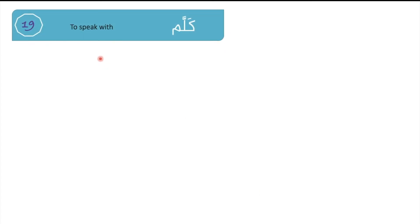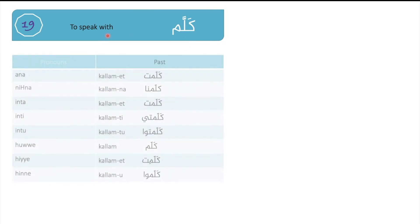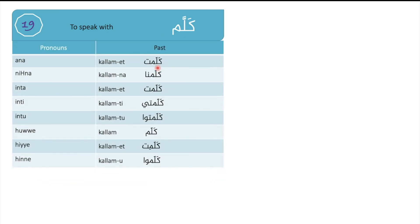Our 19th verb is كلّم (kallam), meaning to speak with someone. Conjugation: ana kallamtu, nihna kallammna, inta kallamtu, inti kallamti, intu kallamtu, huwa kallam, hiye kallamat, henne kallamu.